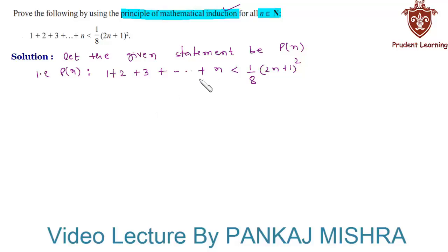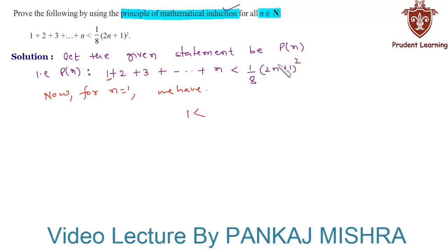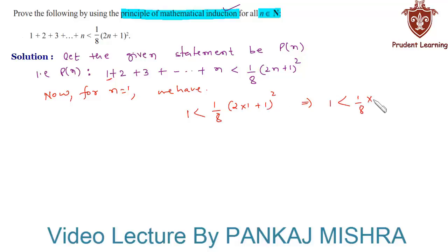In our first step, we will verify whether the given inequality holds true for n equal to 1. For n equals 1, on the left hand side we have P(1) equal to 1, whereas on the right hand side, substituting n equal to 1 gives us one-eighth of (2×1+1)² = 1/8 of 9 = 9/8. So 1 is less than 9/8, which is true. Therefore P(1) is true.